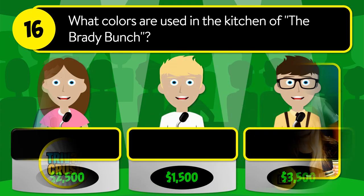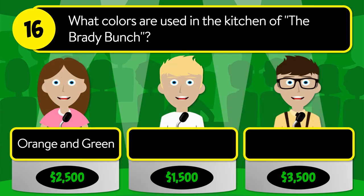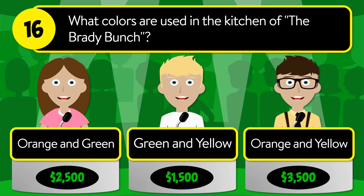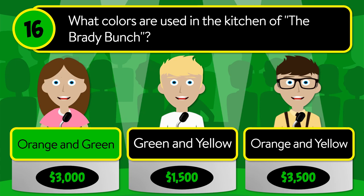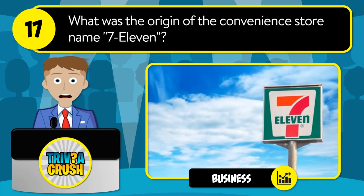Question number sixteen: what colors are used in the kitchen of the Brady Bunch? Was it orange and green, green and yellow, or orange and yellow? The correct answer is orange and green.